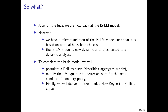To complete this basic model, we will first postulate a Phillips curve describing aggregate supply. We will also modify the LM equation to better reflect how actual monetary policy is conducted today — central banks no longer set the money supply but instead target interest rates, following rules such as the Taylor rule. Finally, after discussing this simple model, we will derive a micro-founded New Keynesian Phillips curve that substitutes for the postulated Phillips curve introduced at the beginning.